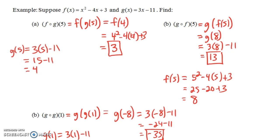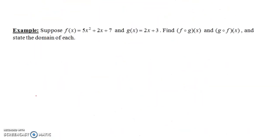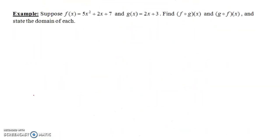So you can compose a function with itself. Now let's do two more examples. Suppose f of x is 5x squared plus 2x plus 7, and g of x is 2x plus 3. How do we find a formula for f of g of x, and also for g of f of x? Then we'll state the domain of each.